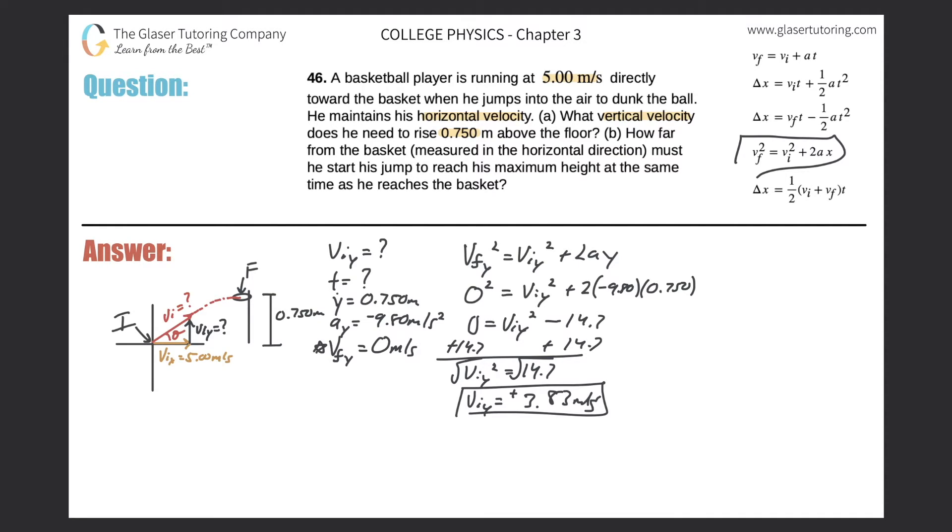Now question B says, how far from the basket measured in the horizontal direction does he need to start his jump to reach the maximum height at the same time as he reaches the basket? That's the important thing.